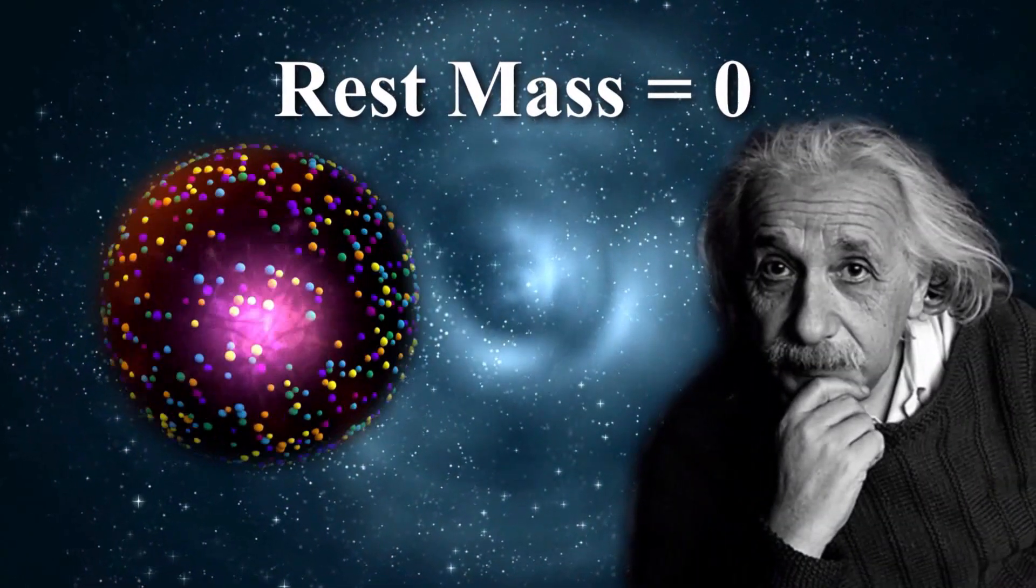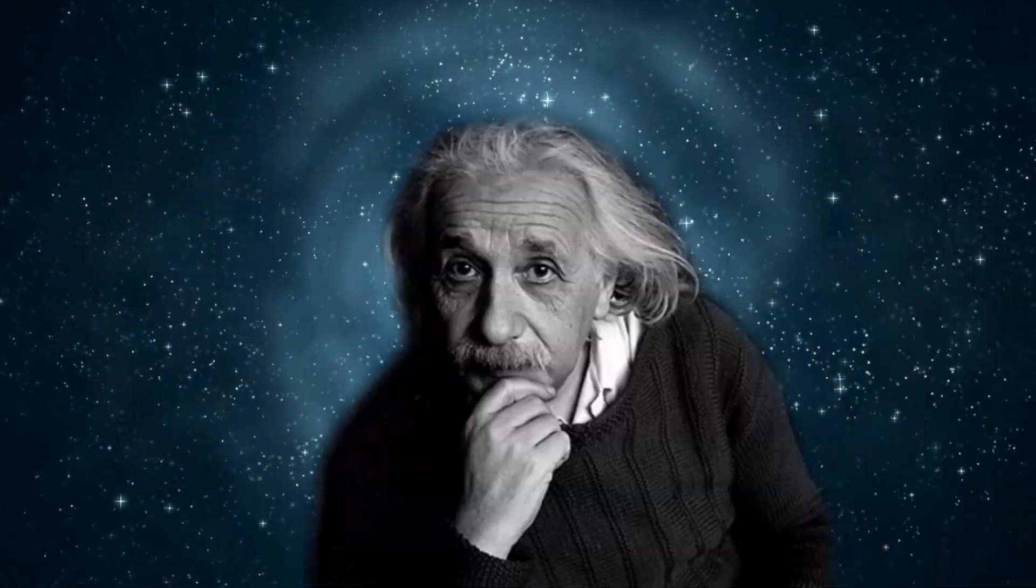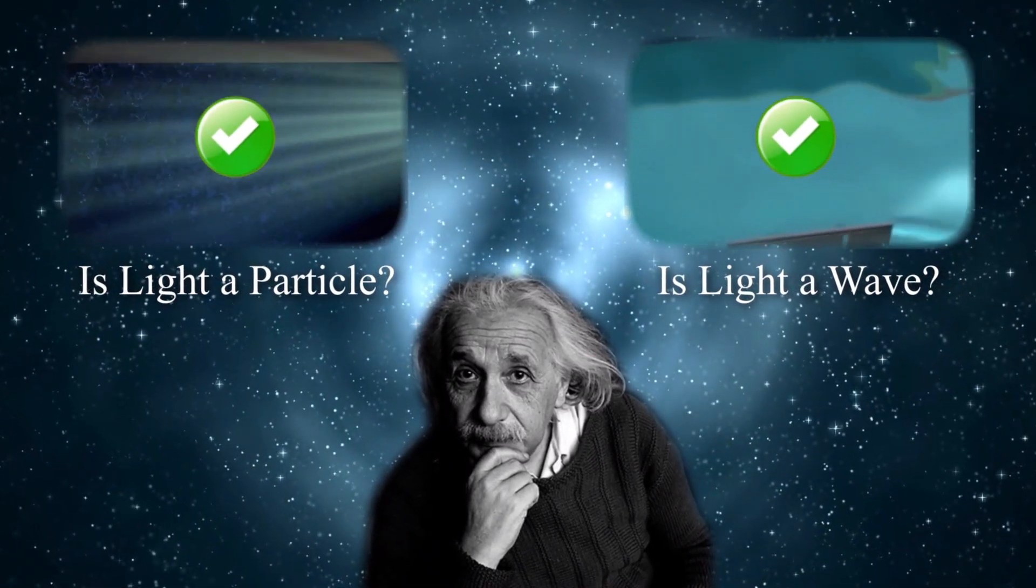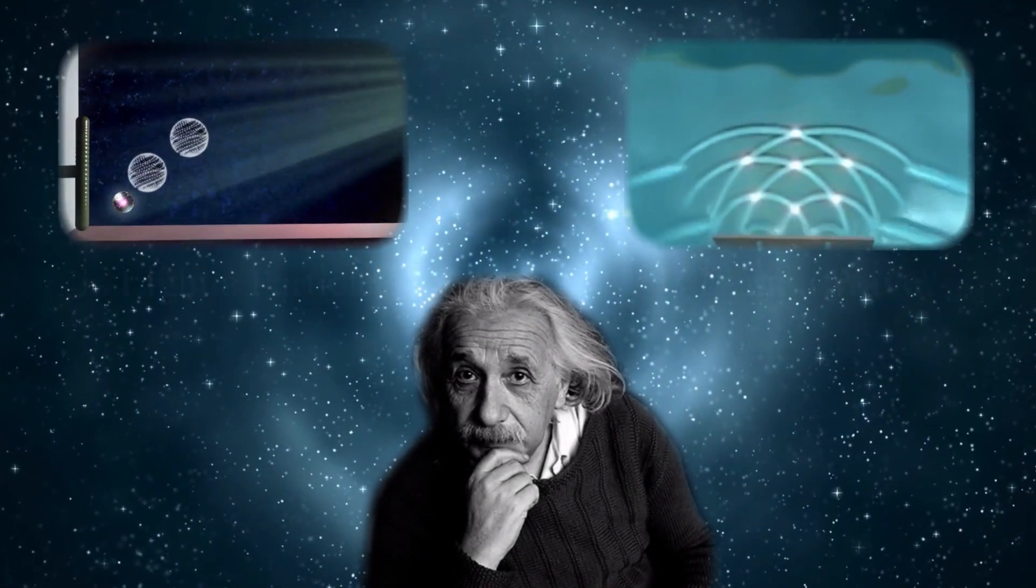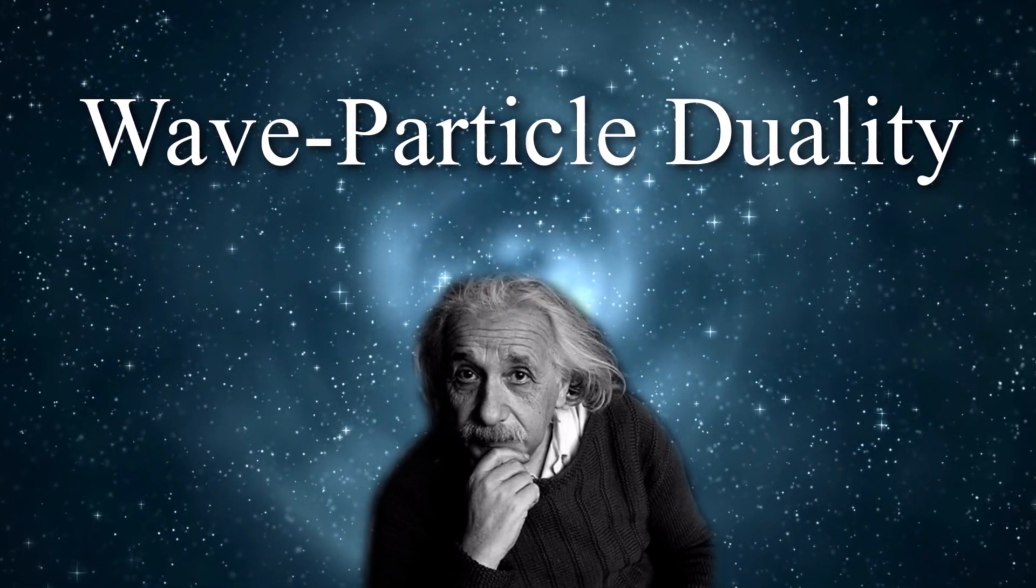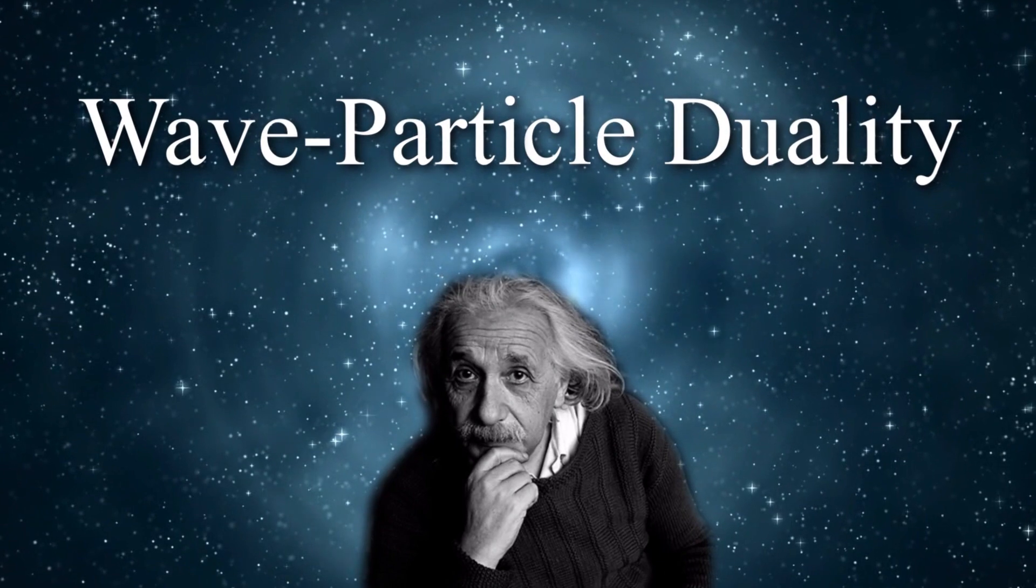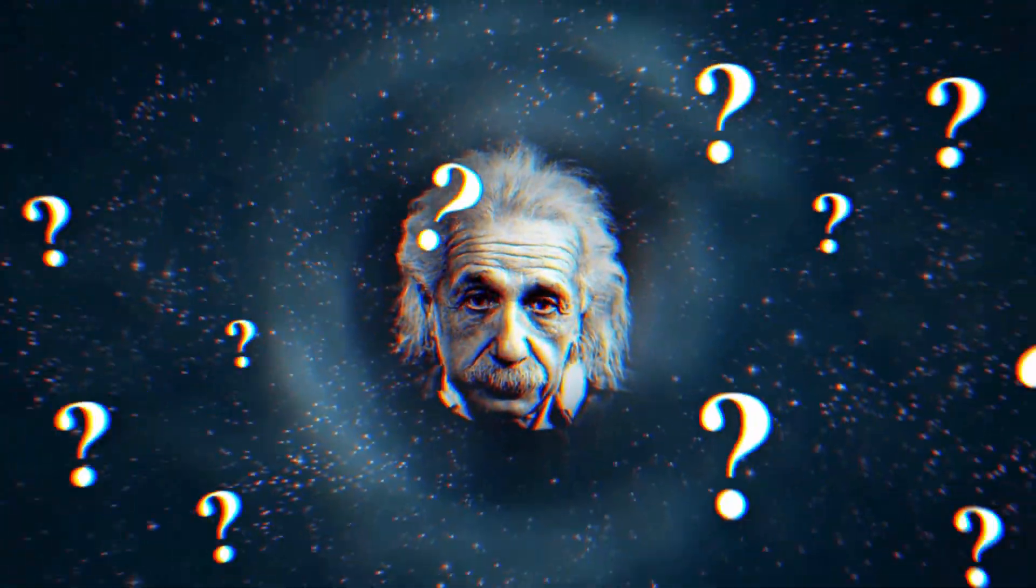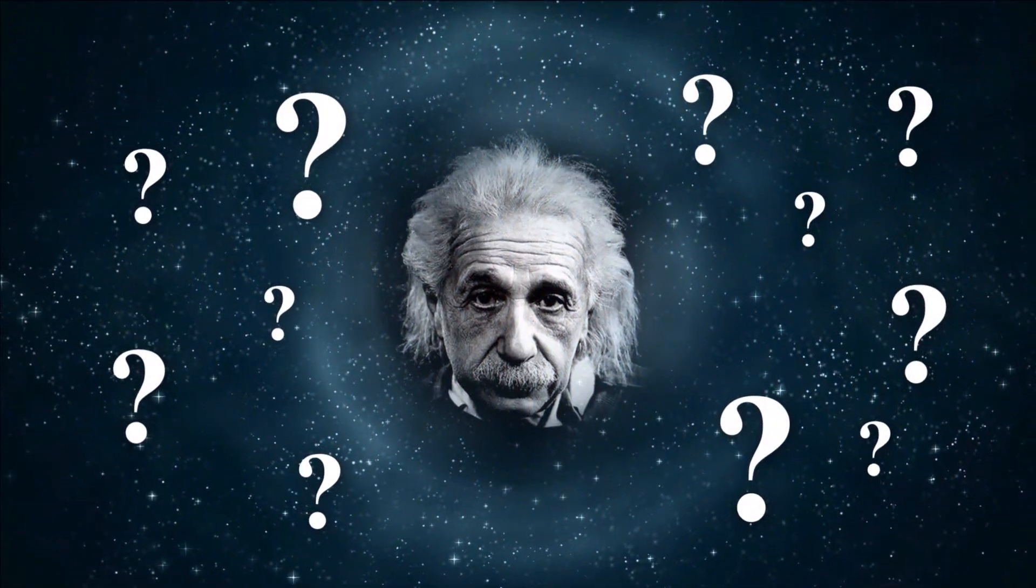Einstein defined a packet of energy with zero rest mass and explained both the double slit experiment and the photoelectric effect. On the other hand, it seems Einstein himself did not accept wave-particle duality and knew that as only a temporary way out.